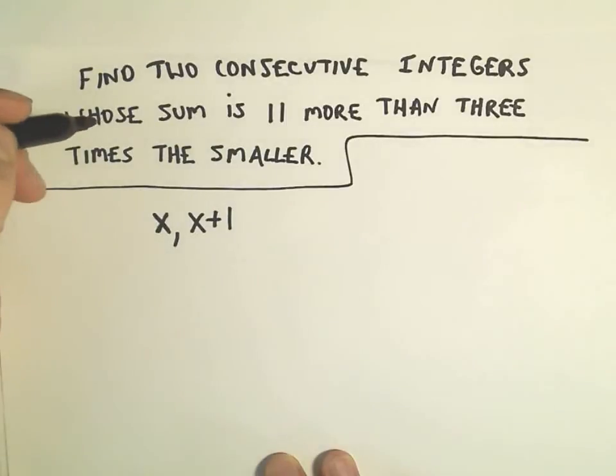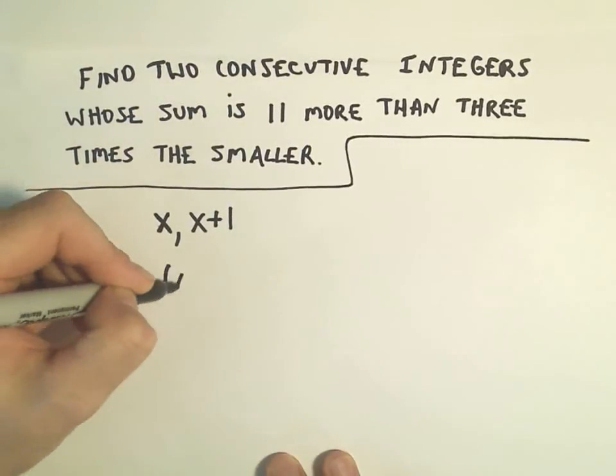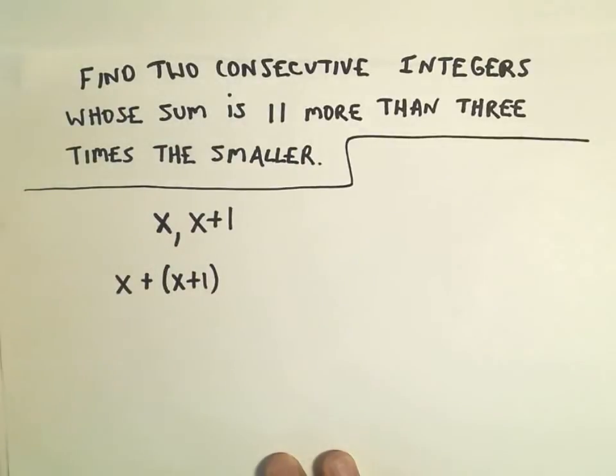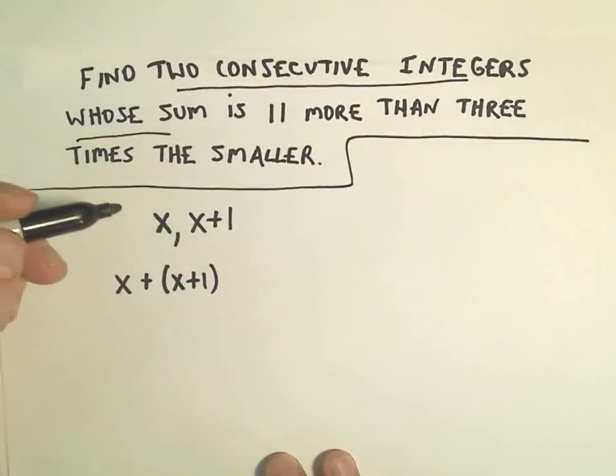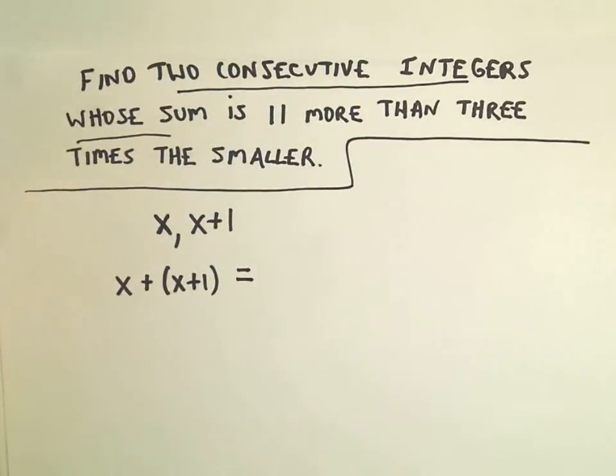It says their sum is 11 more than 3 times the smaller. So their sum would be x plus (x+1). That's the sum of our two consecutive integers. I usually read 'is' as an equal sign.